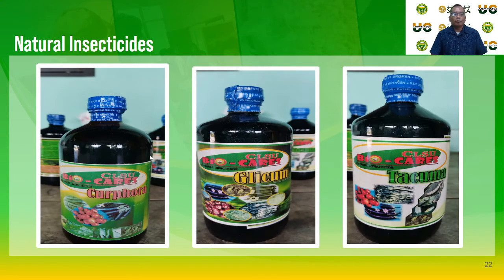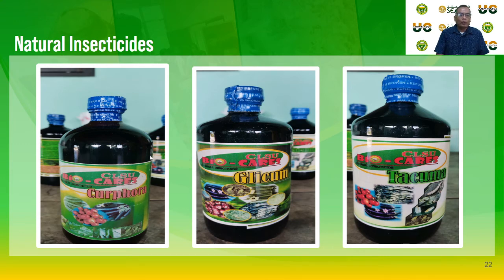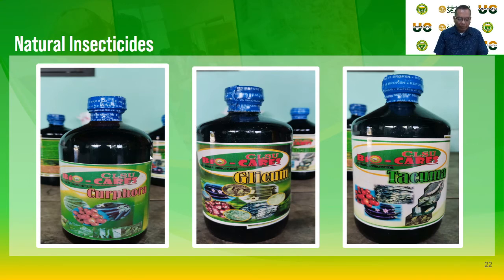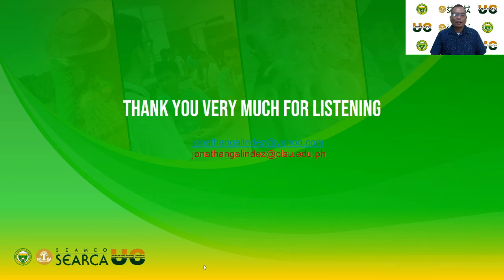Another direct treatment is the utilization of natural insecticides or biopesticides. Biopesticides are extracts from plants with pesticidal properties. At our center, we produce biopesticides from Gliricidia sepium (madre de cacao) — we collect leaves, extract them, and use the extract as a biopesticide to control insect pests. Other plants that can be utilized as sources of biopesticides include turmeric (luyang dilaw) and hot pepper (Capsicum annuum), all of which have pesticidal properties.